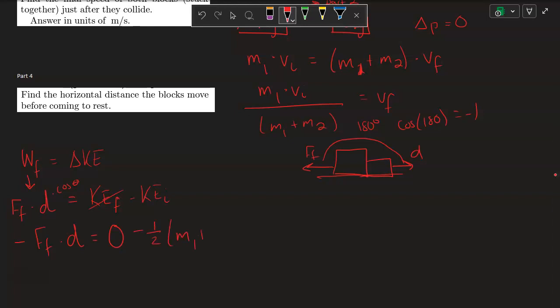0.5 times m1 plus m2 times the final velocity from part 3 squared, or sorry, times the initial velocity. That's from part 3, and you will square that.